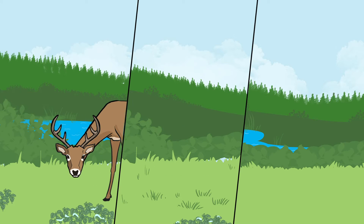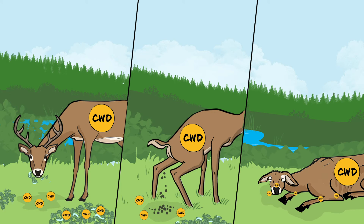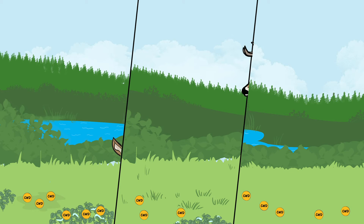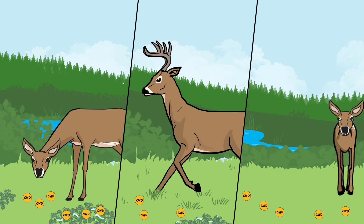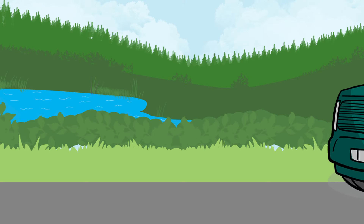Prions shed by infected deer can build up in the surrounding area. When infected deer die, the prions inside their bodies also enter the soil or water. Uninfected deer may then be exposed to the prions in the environment, which can remain infective for years.